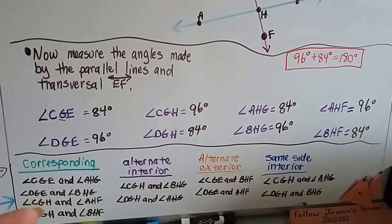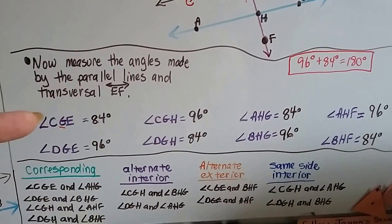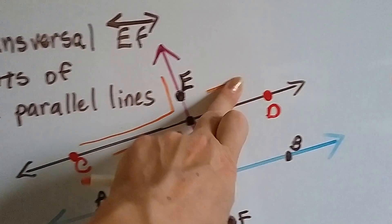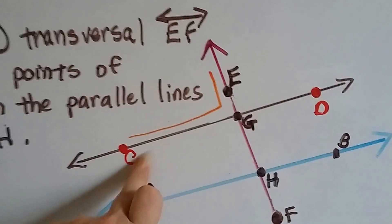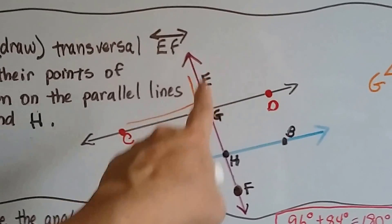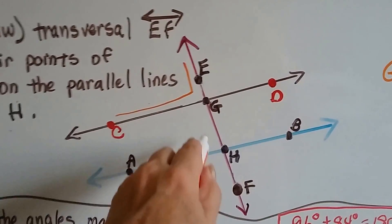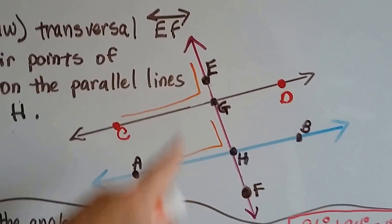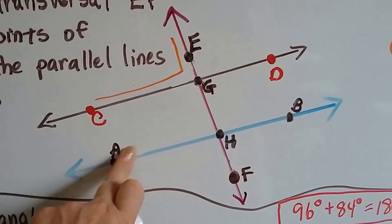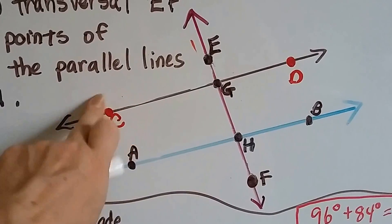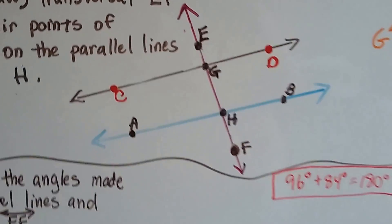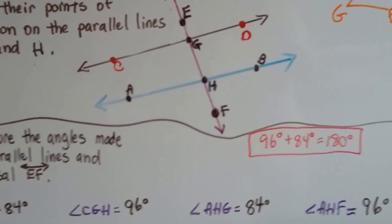We've got corresponding angles: CGE and AHG. CGE is this angle marked in orange, and AHG would be this one. Those are corresponding angles — can you imagine it slid down like a translation, that this one just slid into that one and they're congruent?